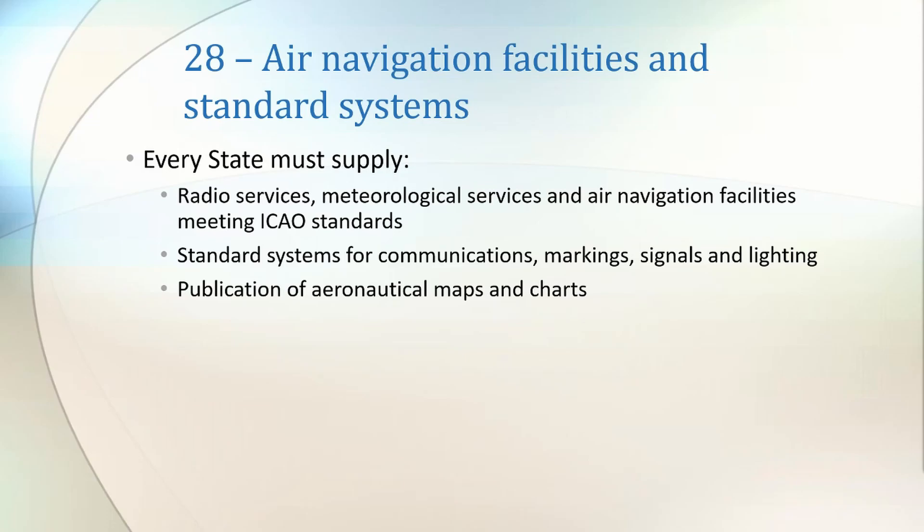Article 28 lays out a set of services and facilities that must be supplied by all ICAO states. This includes radio services, meteorological services and air navigation facilities. It requires that states adopt standardised systems for communication, markings, signals and lighting. Finally, it requires that states publish maps and charts that cover the areas they hold sovereignty over.